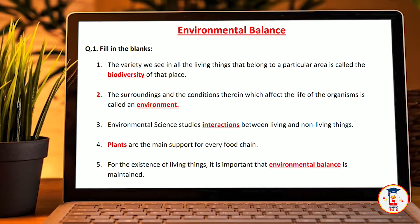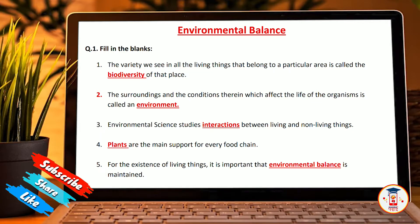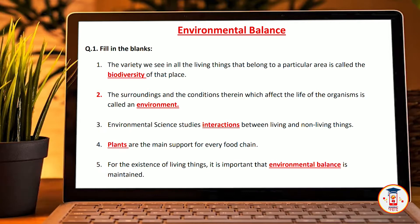First of all, the variety we see in all living things that belong to a particular area is called biodiversity of that place. The surrounding conditions which affect the life of the organism is called environment. Environmental science studies interaction between living things and non-living things. Plants are the main support for the food chain.